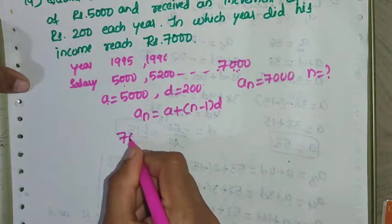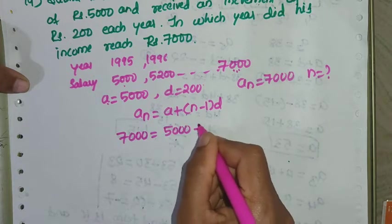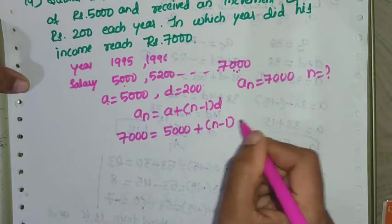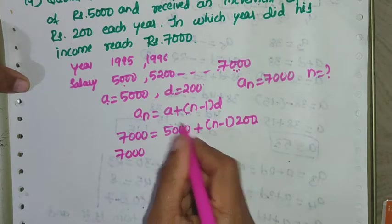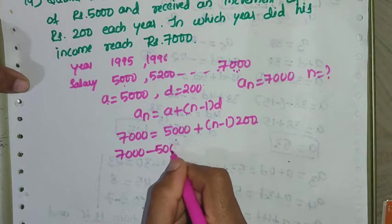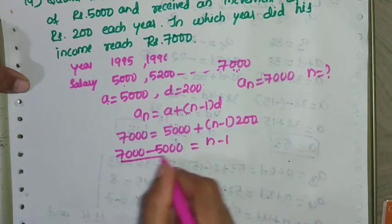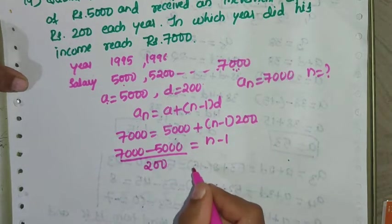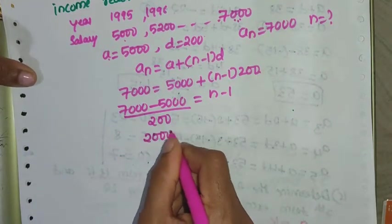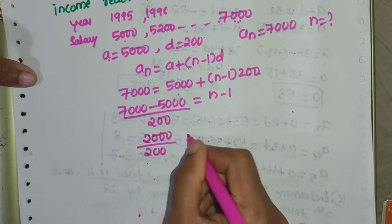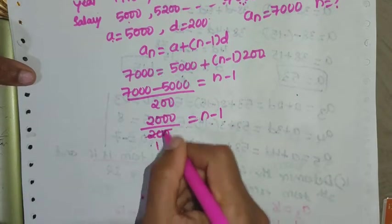Here a_n is 7000, A is 5000. So 7000 = 5000 + (n-1) × 200. Then 7000 - 5000 = (n-1) × 200. Dividing by 200 gives 10 = n - 1.